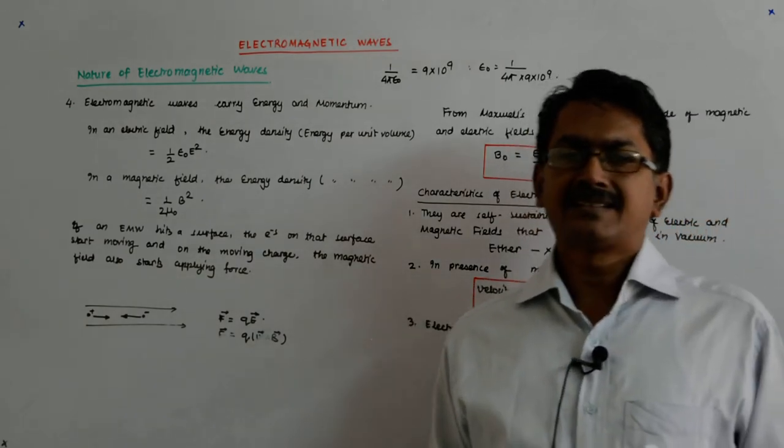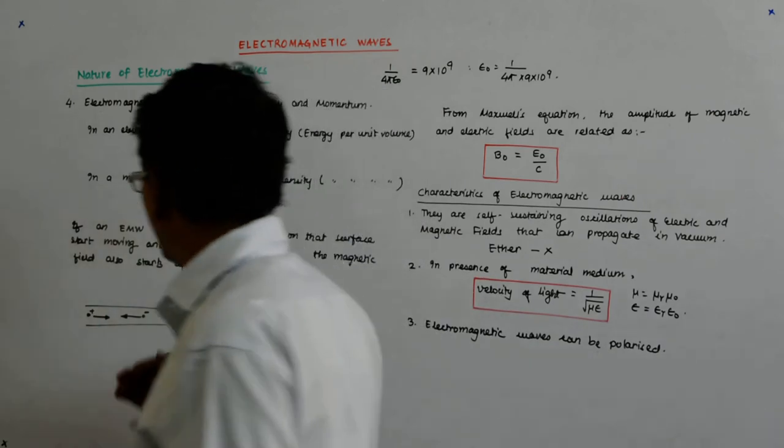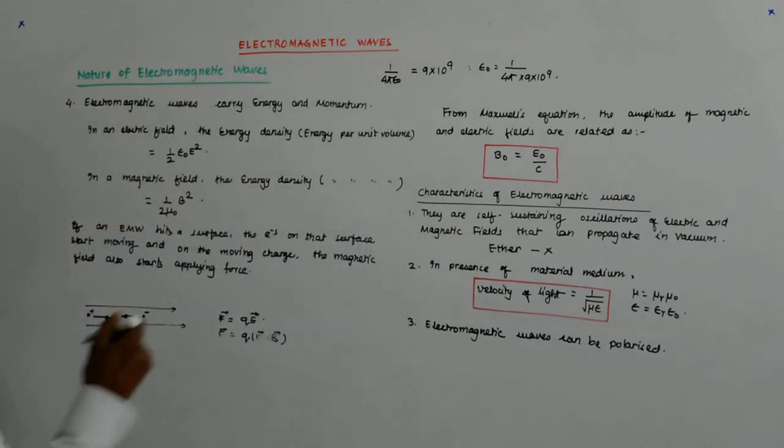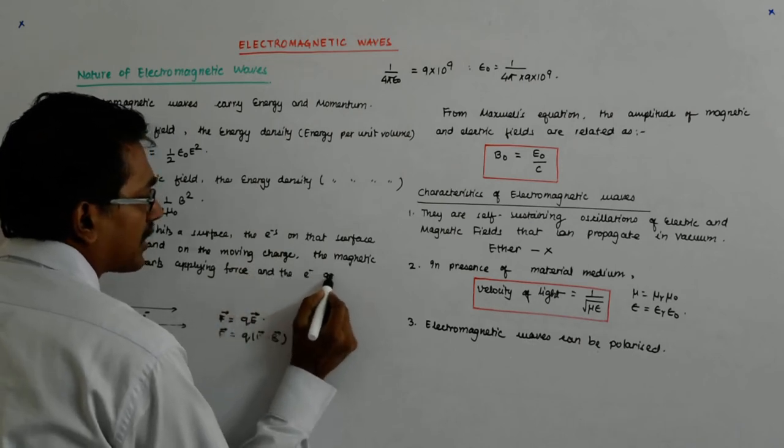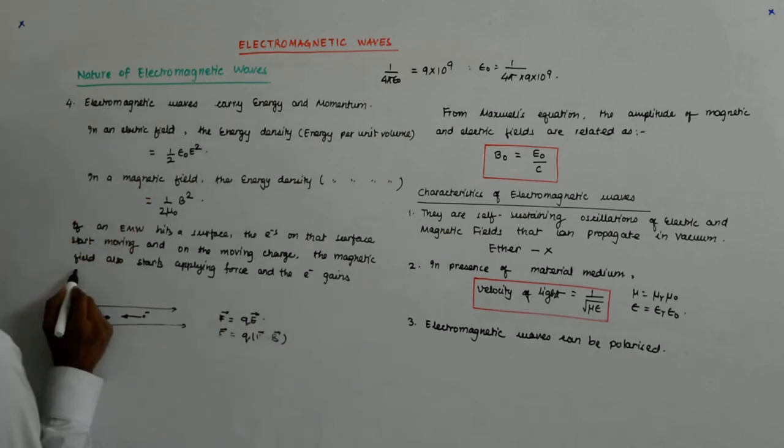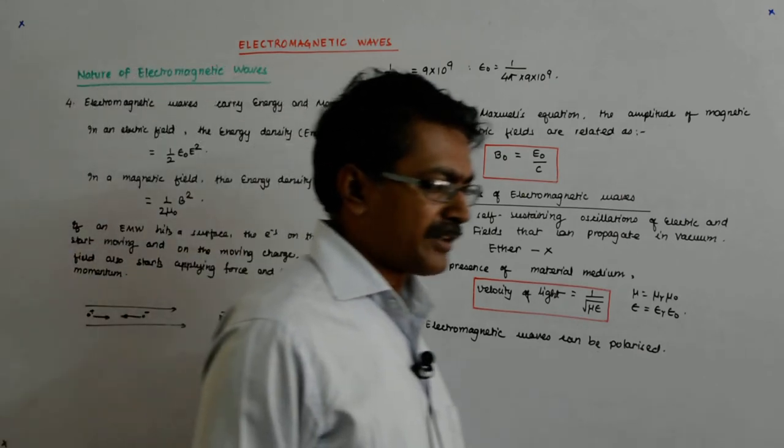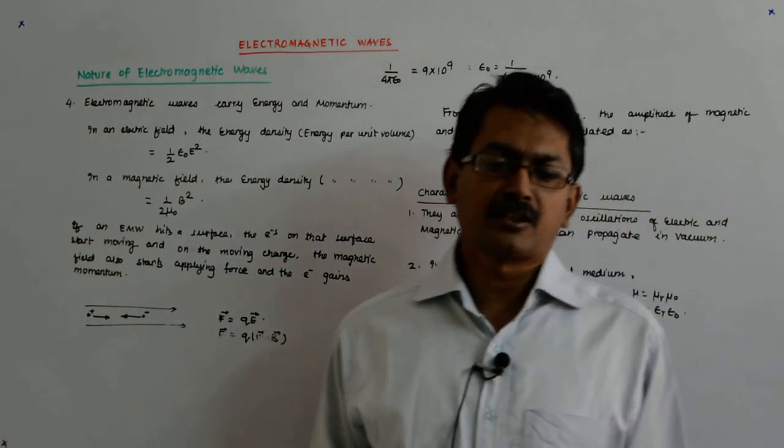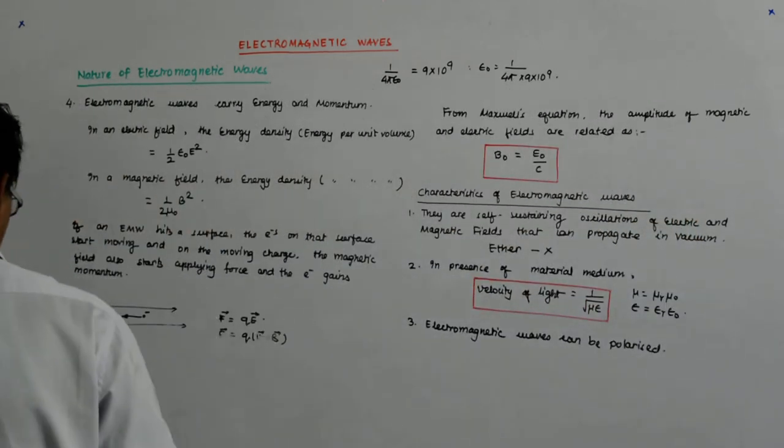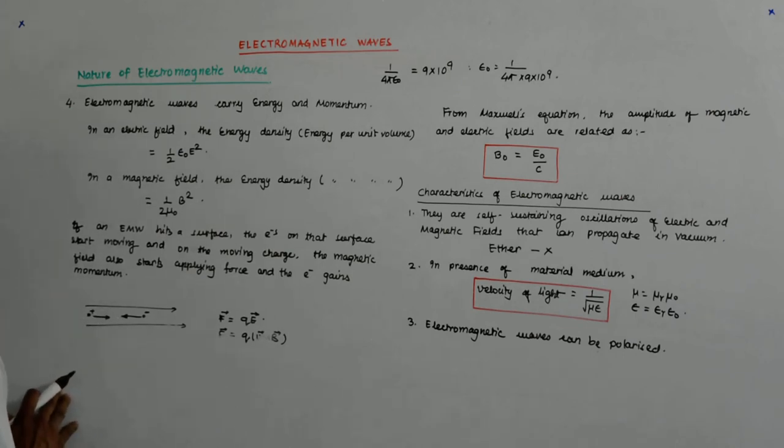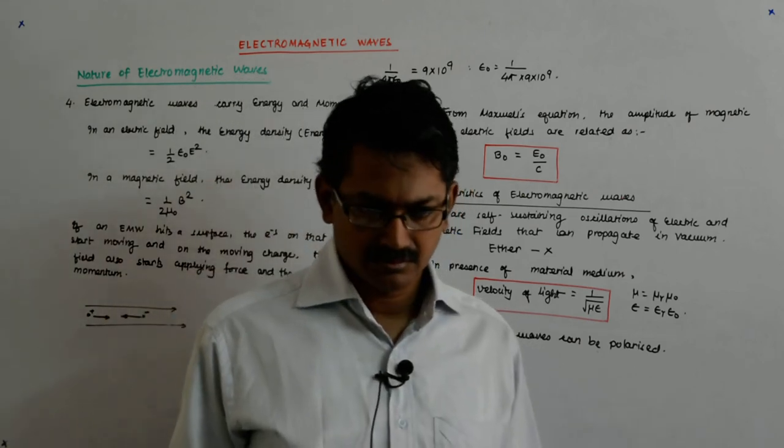Now, our classical mechanic says until and unless an object has a momentum, it cannot start applying force and the electron gains momentum, first of all. Gains momentum. Now, we know that until and unless something has got a momentum, it cannot impart a momentum to something else. It is in that sense that we say that it has momentum and not only that, it has a momentum, energy as well as momentum. Due to this momentum, there is also radiation pressure.